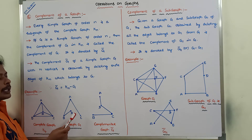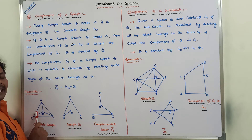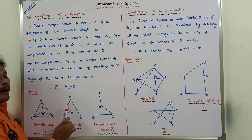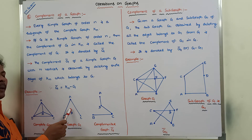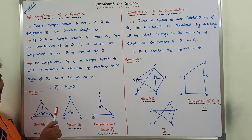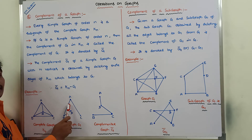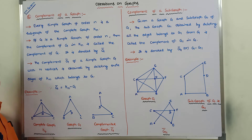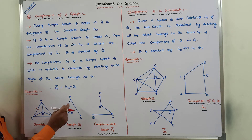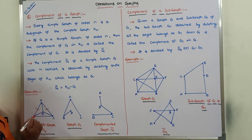Now we have to find out the complement of this graph. The complement of graph G is denoted by G-bar. G-bar is obtained by eliminating whatever edges are present in G from the complete graph Kn. For example, edge AB is eliminated from K4, edge AC is eliminated from K4, and edge BD is eliminated from K4.